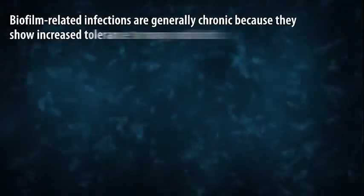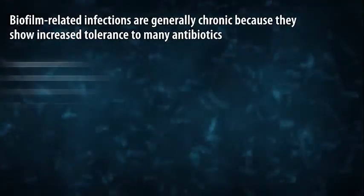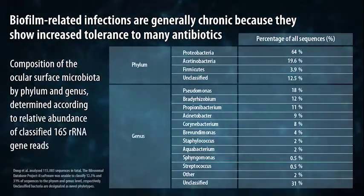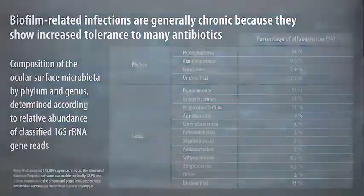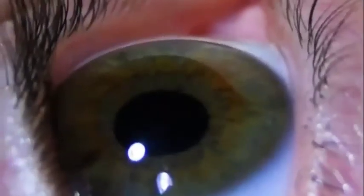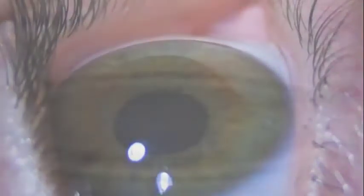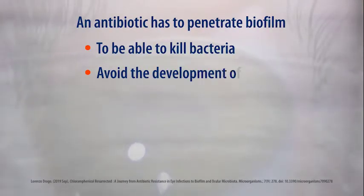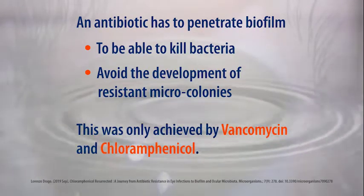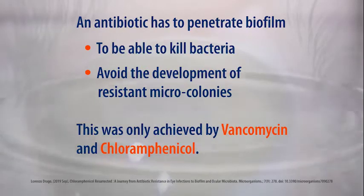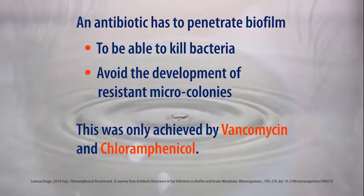Biofilm-related infections are generally chronic because they show increased tolerance to many antibiotics. An antibiotic has to penetrate the biofilm to be able to kill bacteria and avoid the development of resistant micro colonies. This was only achieved by vancomycin and chloramphenicol.